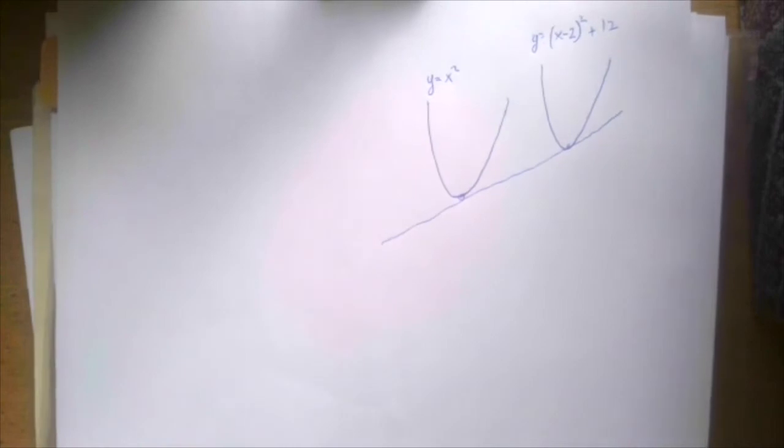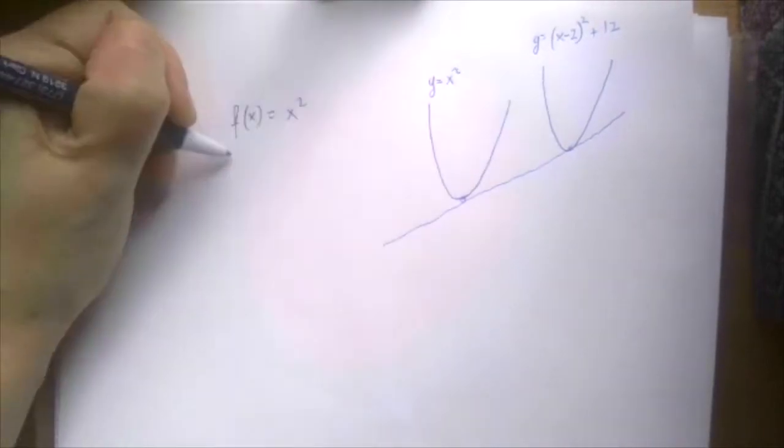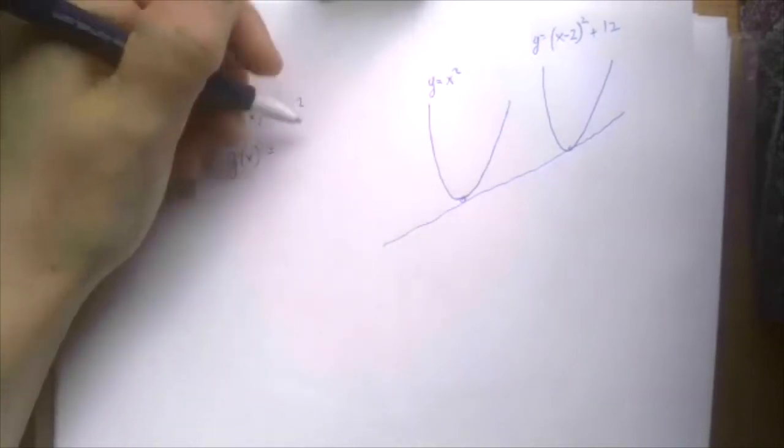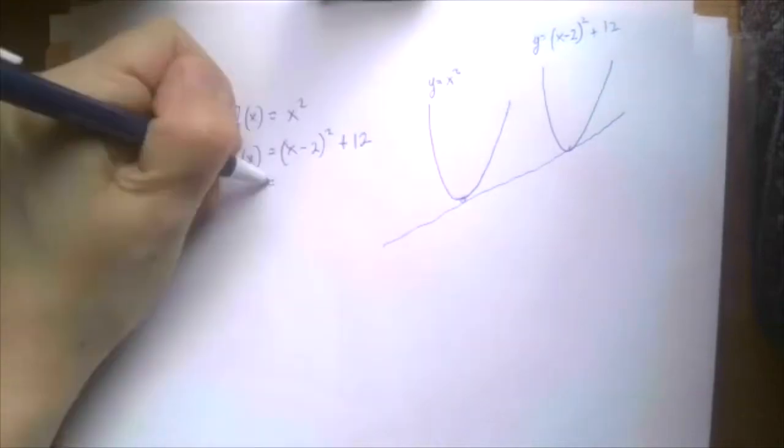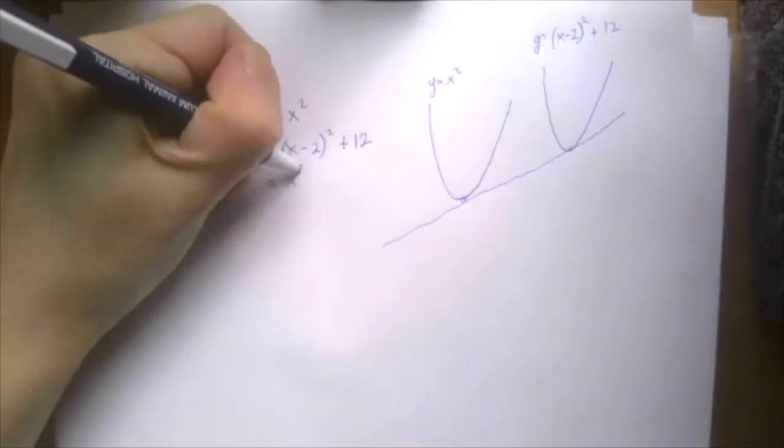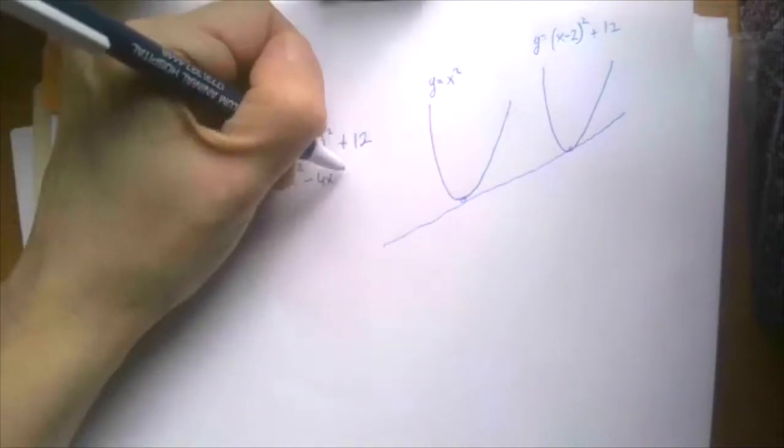Let us develop some notations. Let's let f of x be x squared and g of x be the other function x minus 2 squared plus 12, which is also x squared minus 4x plus 16.